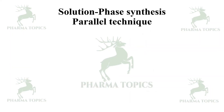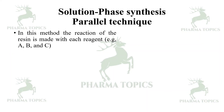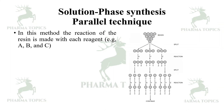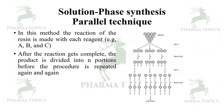The parallel technique: in this method, the resin is made to react with each reagent — first with A, then B and C, then the next compound. After the reaction is complete, the product is divided into portions before the procedure is repeated again.